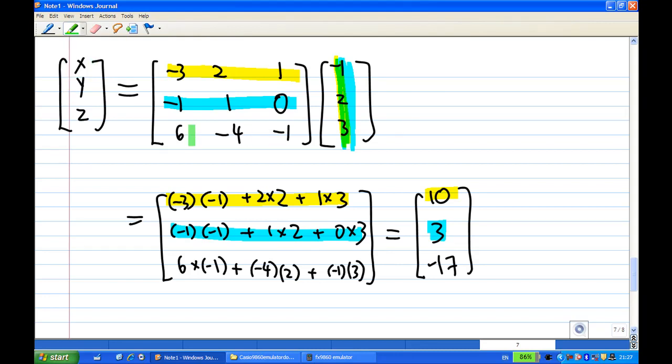If you use the third row times the column there, then it will give you this value, which is -17. So, [x; y; z] equals x = 10, y = 3, z = -17.